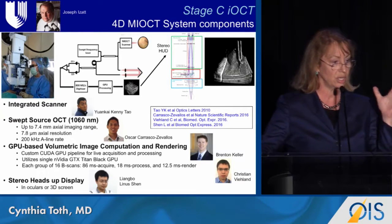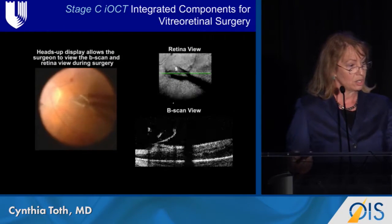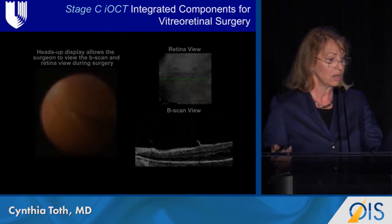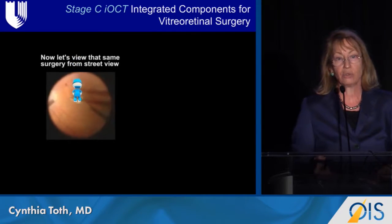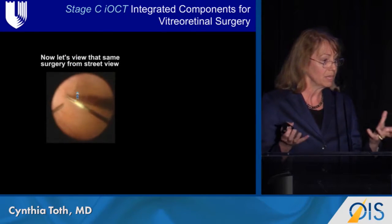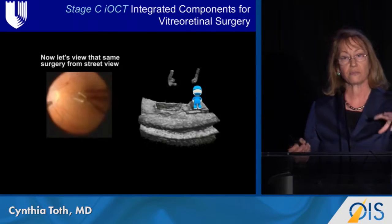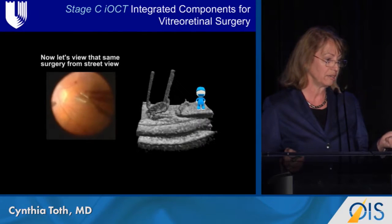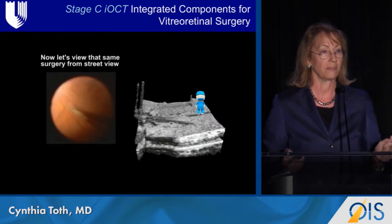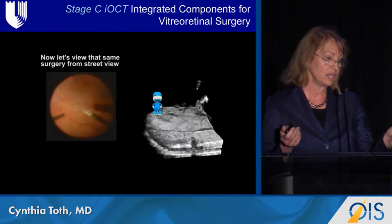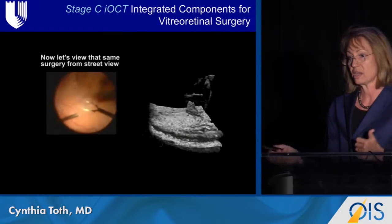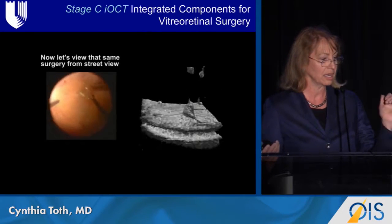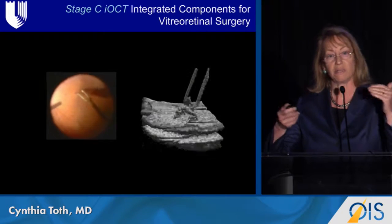By combining these together, the surgeon can integrate the view so that instead of looking down on the retina and seeing the B-scan view or the retina view, one turns into it — it's more like Google Street View. The surgeon can actually identify forceps interacting with the surface. Just as with OCT in the clinic, surgeons will initially ask what they need it for, but once they start using it and see the interaction between instrument and retina, or instrument and beneath the retina, it becomes a different world.